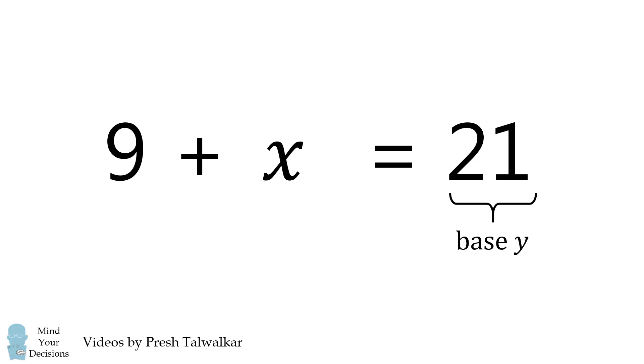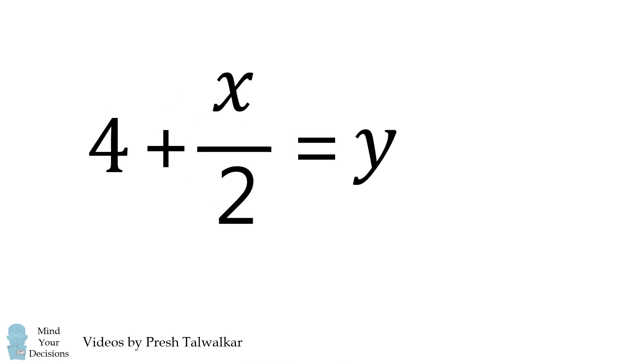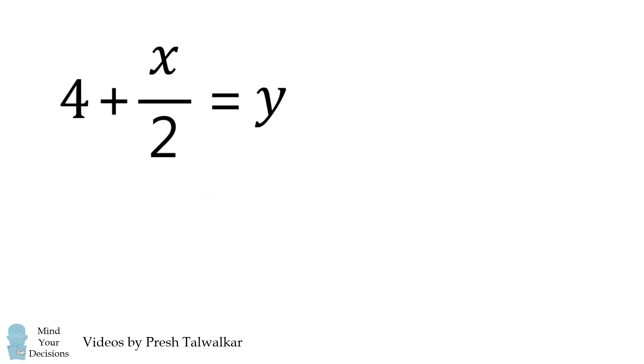We now expand 21 in base y. This will be 2y plus 1. We now simplify this equation. We subtract 1 from both sides, and then we divide by 2, and we further simplify. So we have the equation y is equal to 4 plus x over 2.